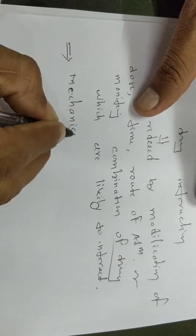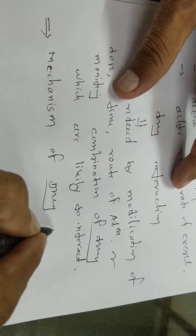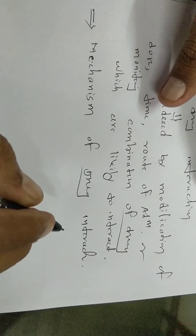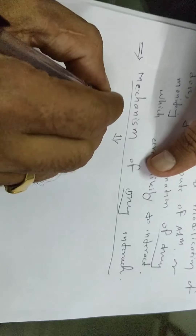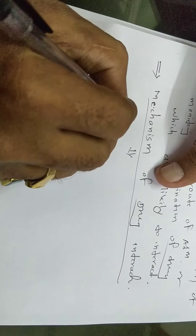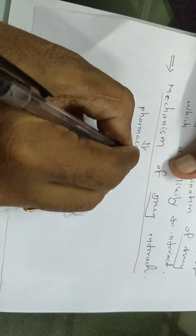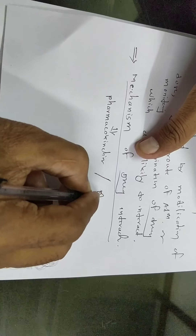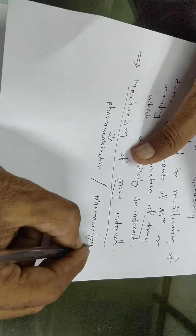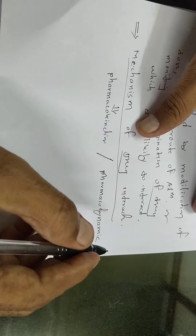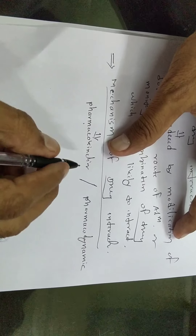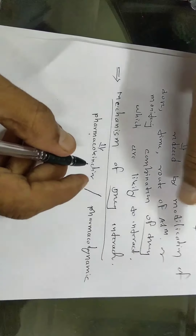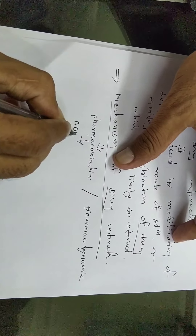Next: mechanism of drug interaction. The mechanism of drug interaction can be pharmacokinetic or pharmacodynamic. You have already studied pharmacokinetics previously. Pharmacokinetic interactions result from absorption, distribution, metabolism, and excretion — the ADME studied in kinetics.